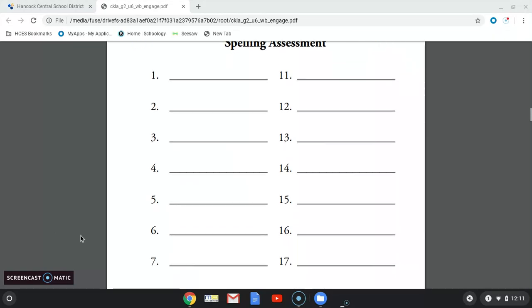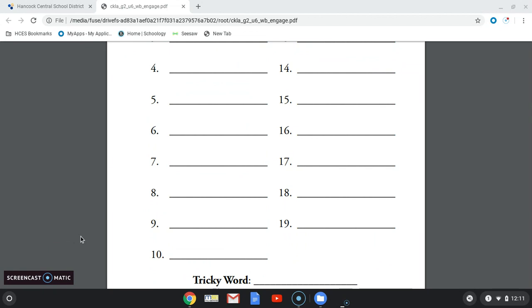Number seven, huge. An elephant is a huge animal. Huge. Number eight, range. A range is the distance between two points. Range.